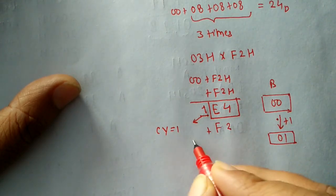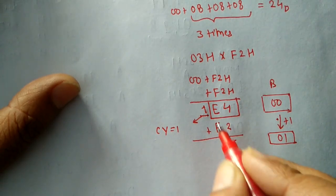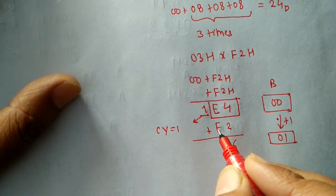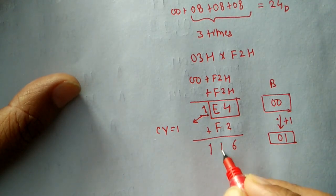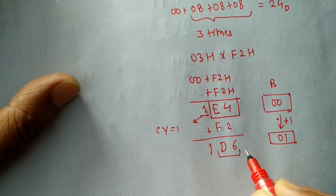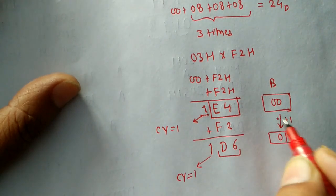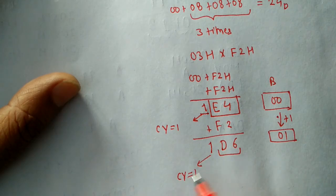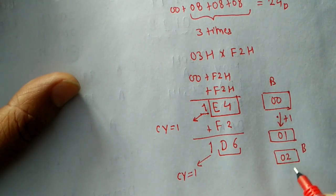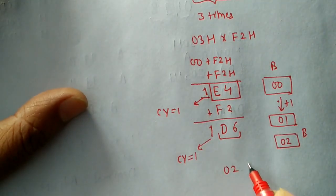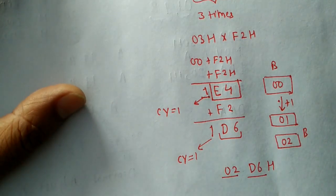This time 4+2=6 and F (15) plus E (14) gives 29 in decimal, which is 1Dh in hexadecimal. We get D6h in the accumulator with carry set again, so we increment register B to 02h. The overall result is 02D6h, which we store in different memory locations.